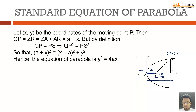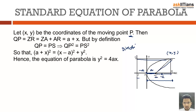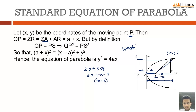For the moving point P, QP equals QS by the definition of parabola — the point is equidistant from the directrix. We also know that QP equals ZR, and ZR equals ZS, which is ZA plus AR. ZA is known to be 'a' and AR is x, so this gives x + a. Similarly, if we had written ZS + SR it would be 2a + x − a, which is x + a again.